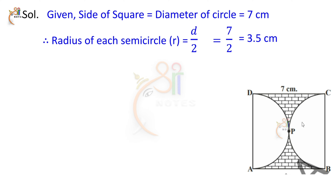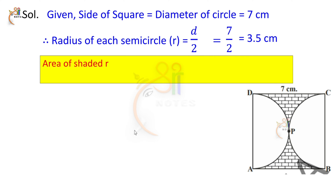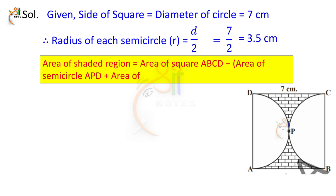The area of the shaded region is equal to the area of square ABCD minus the bracket containing the area of semicircle APD plus the area of semicircle BPC. That is, area of square minus 2 times the area of a semicircle.